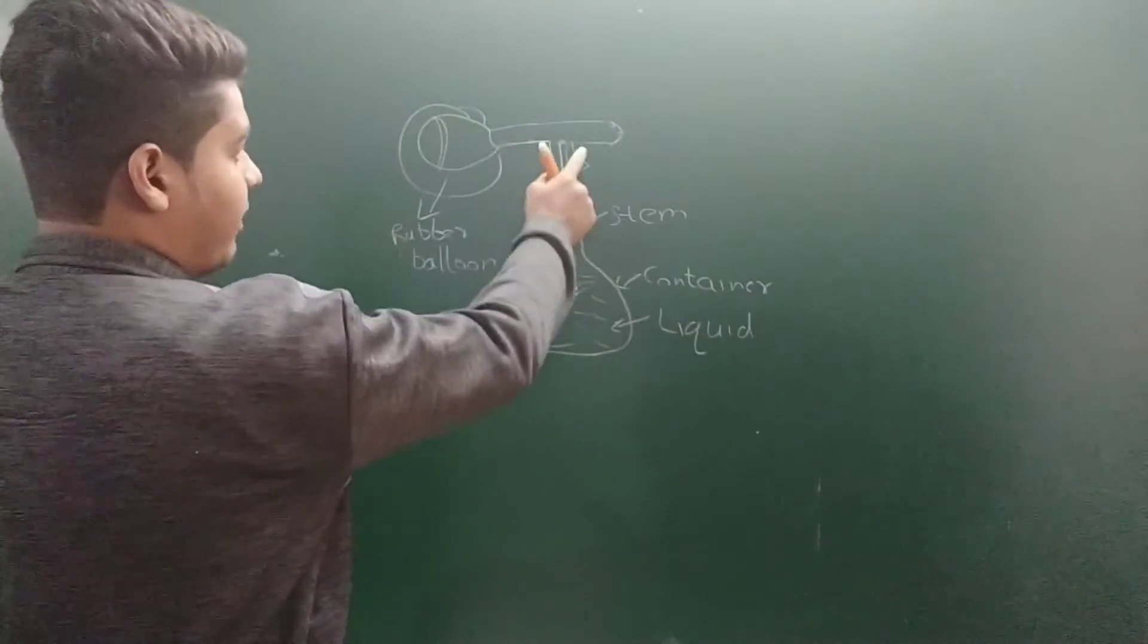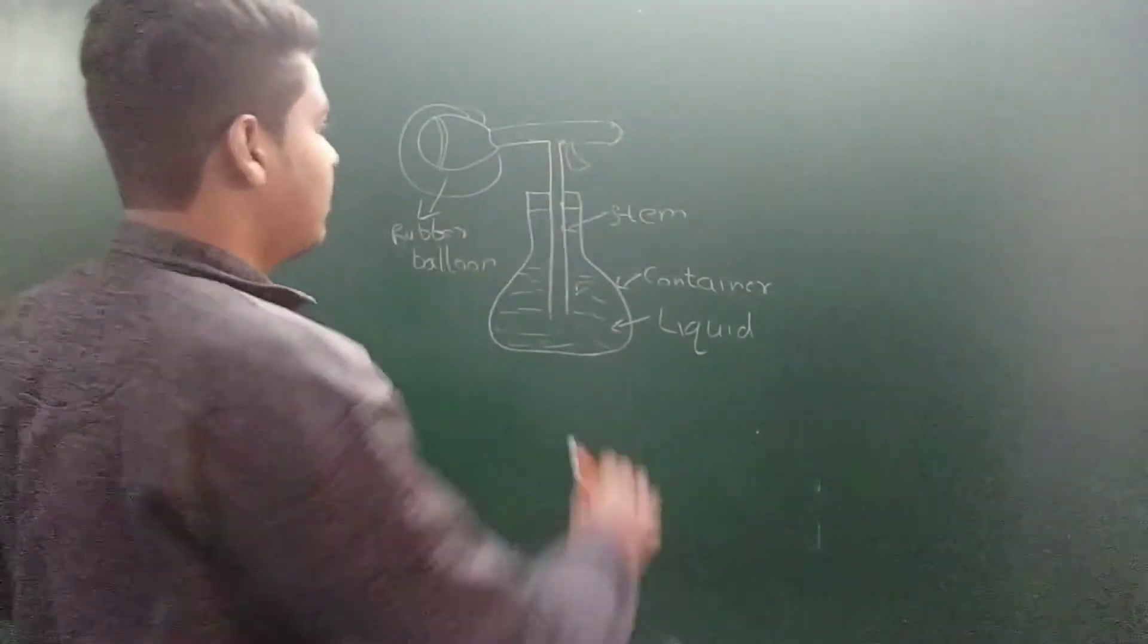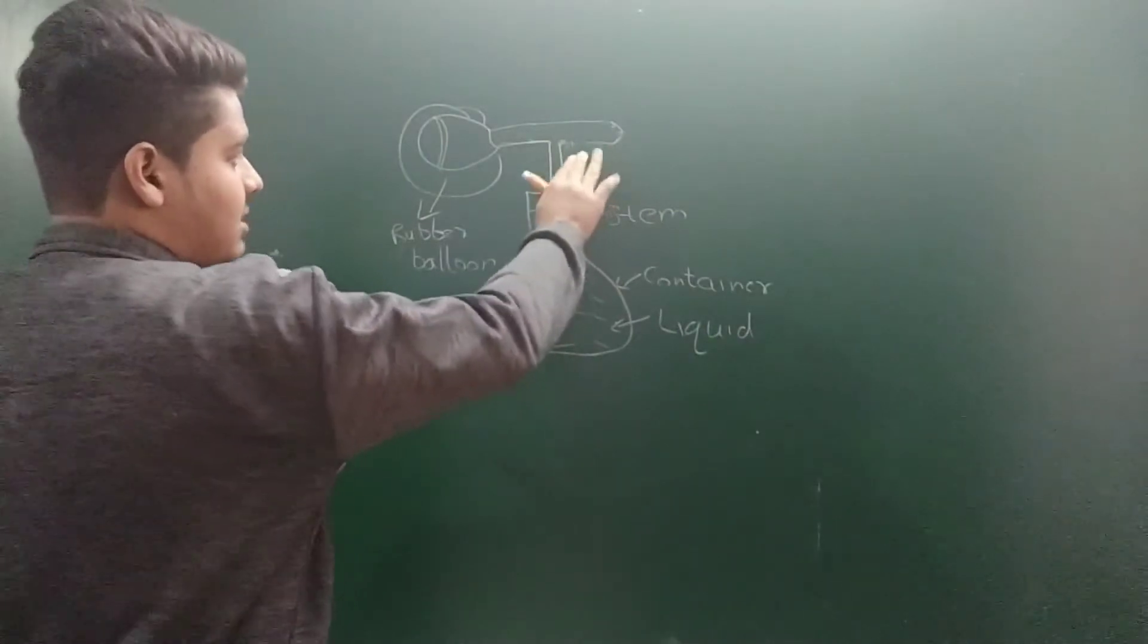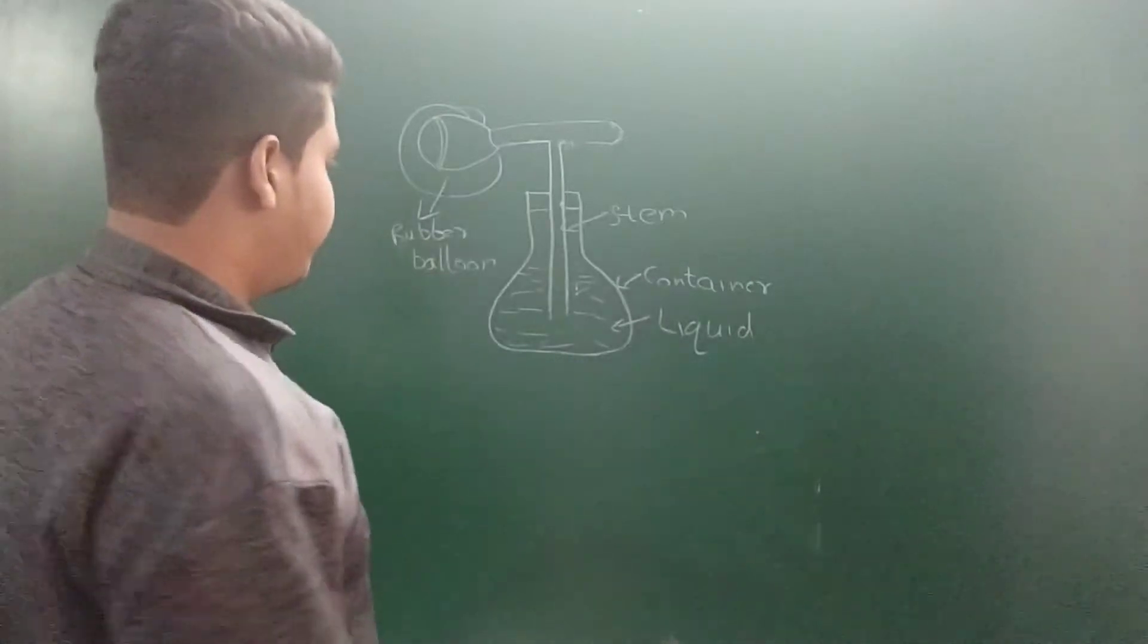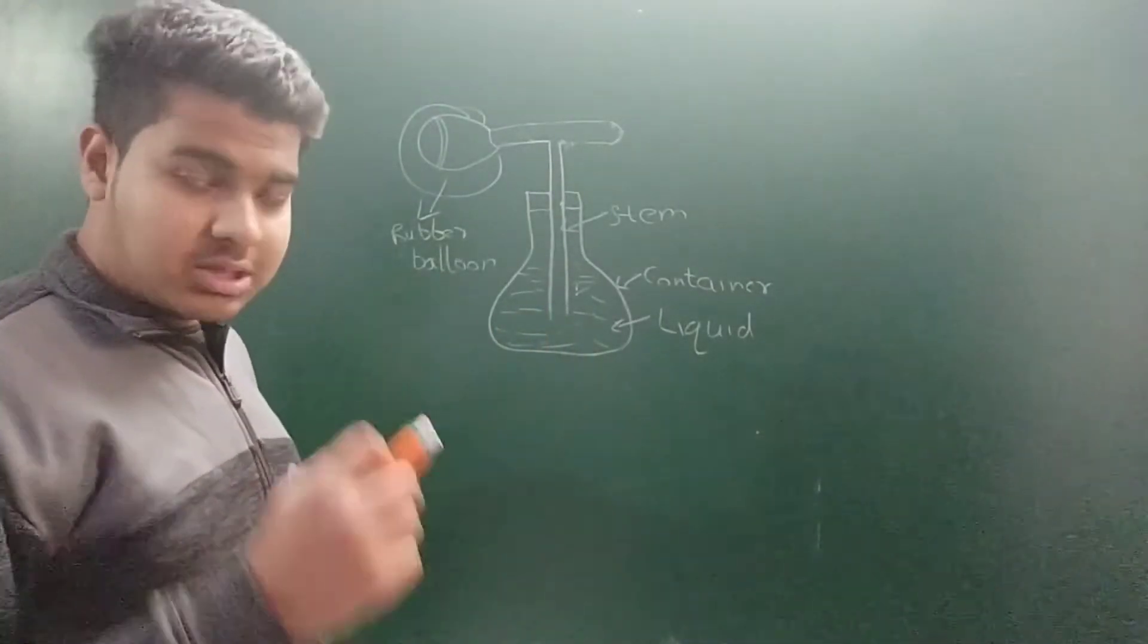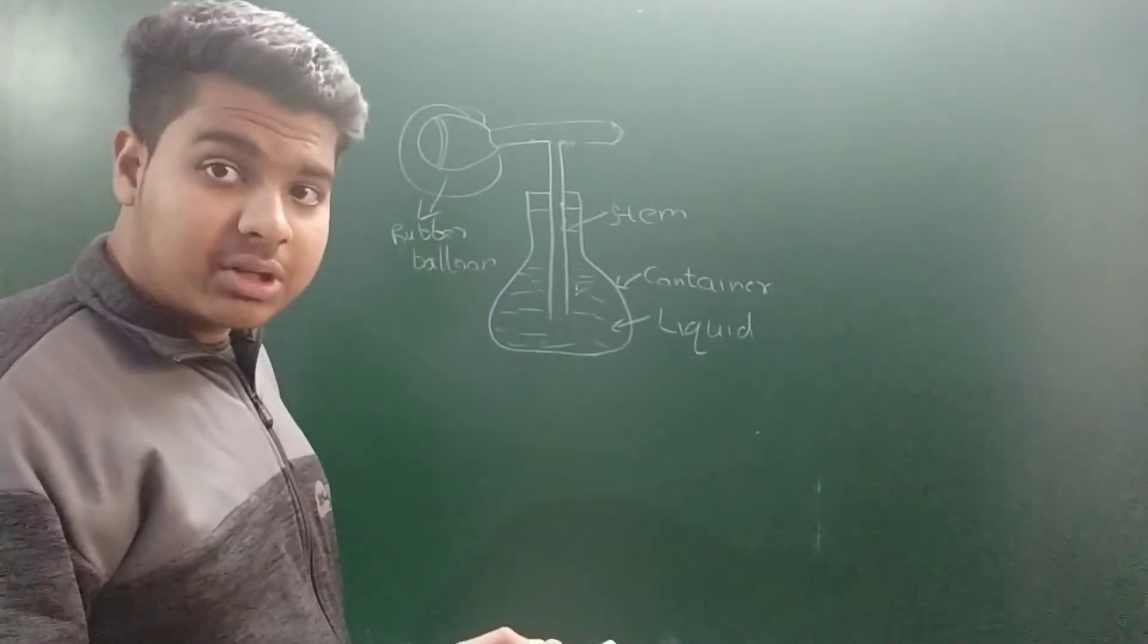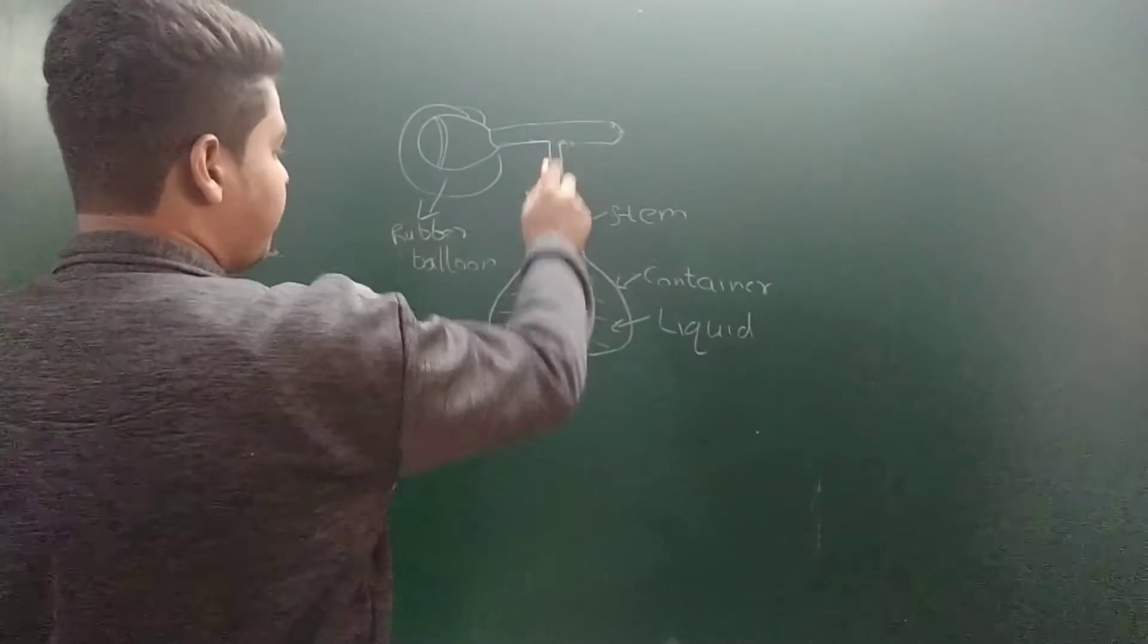But for better understanding we are considering a balloon. So what Bernoulli said: wherever the pressure is low, pressure from a high concentration region goes to a low concentration region. So here, suppose the pressure is equal, and there is air inside it. Because we know when there is nothing, there is air.